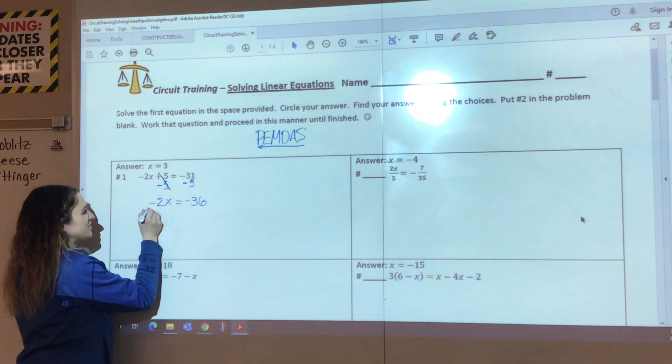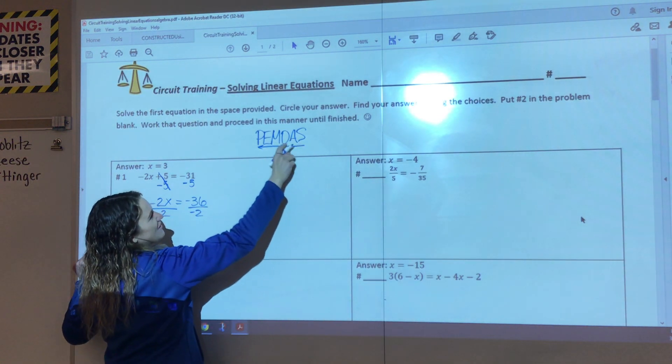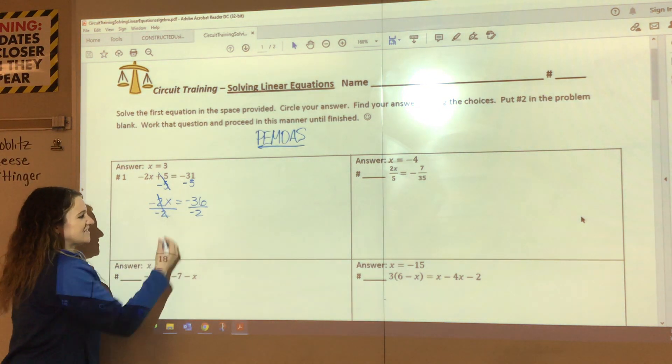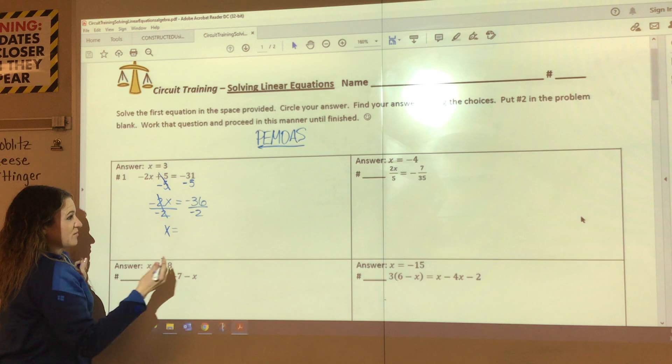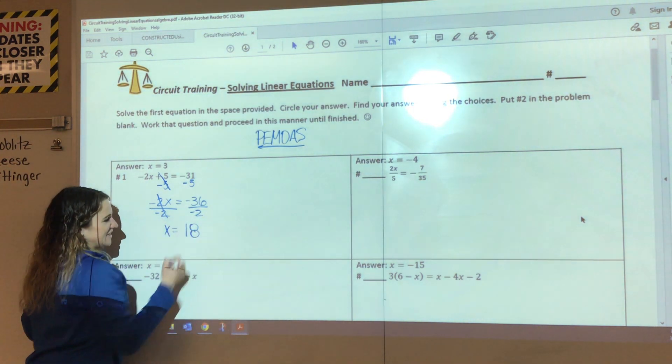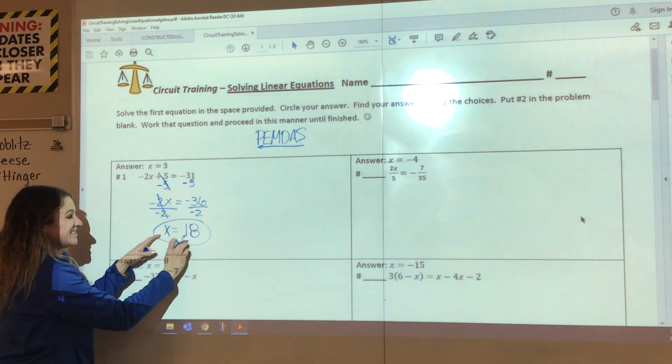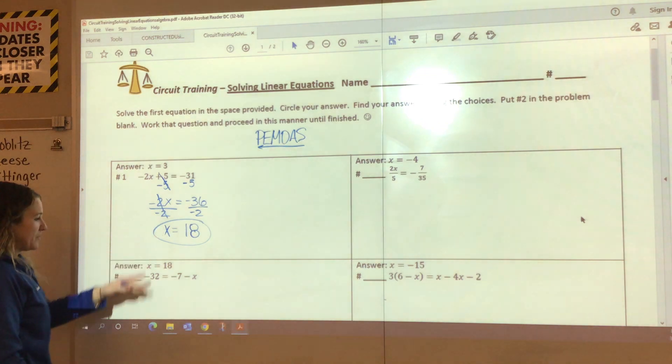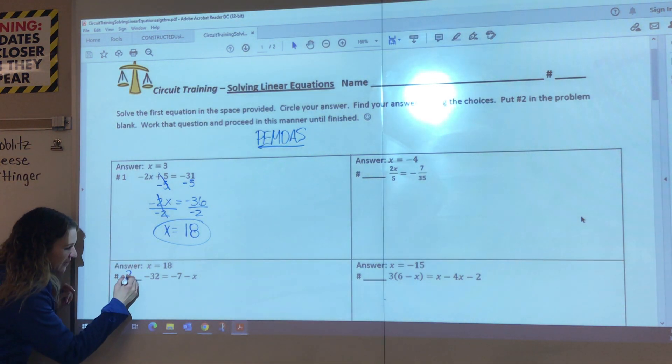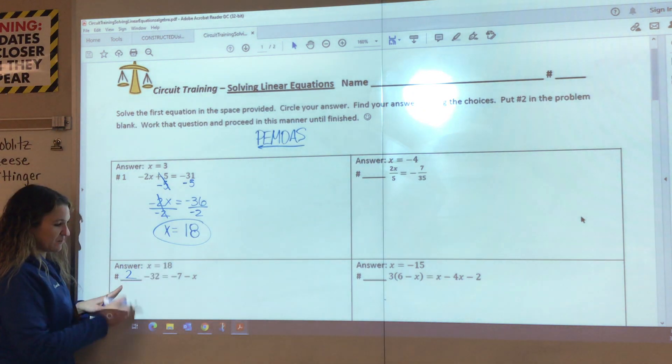My last step would be to divide by -2. That's where I'm at right there. I already had the addition subtracted. Now I need to multiply or divide, get that variable by itself. These cancel out. I need x equals, and -36 divided by -2 is positive 18. So now I'm looking for this answer. It just so happens to be right here below. So here's the number. I'm going to write number 2 because I started number 1, and since this was my answer, I'm going to number 2.